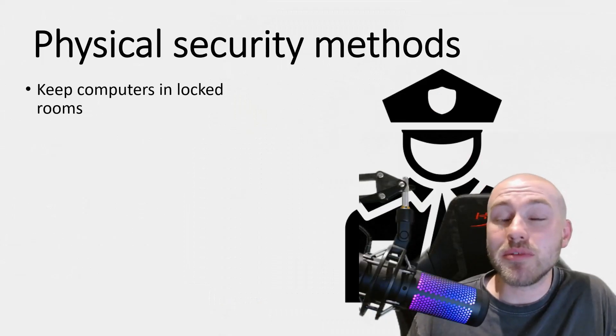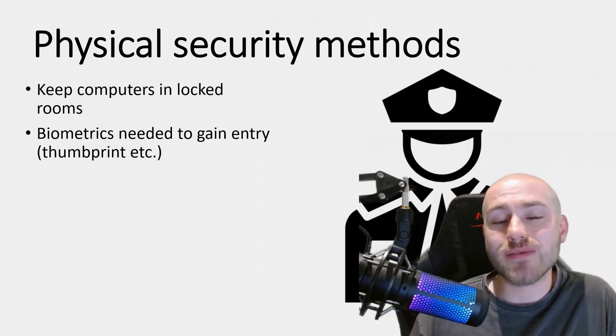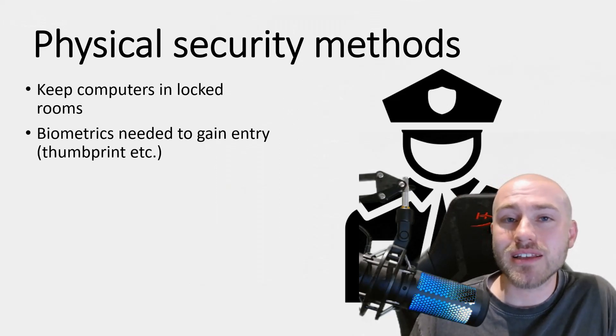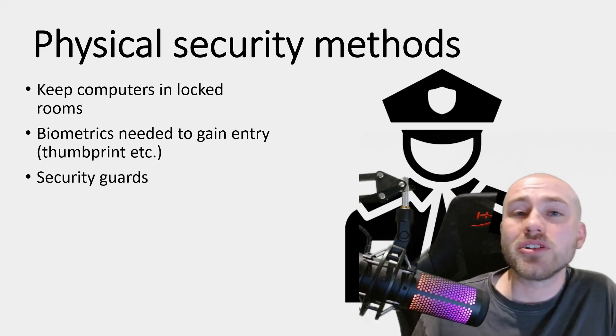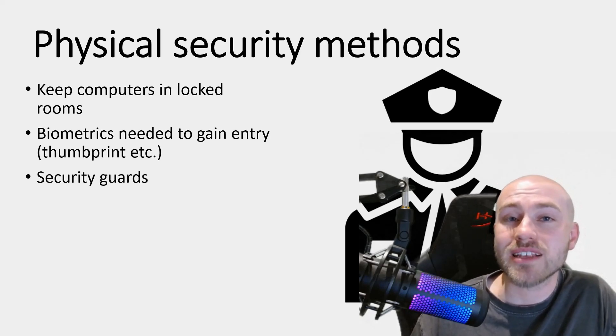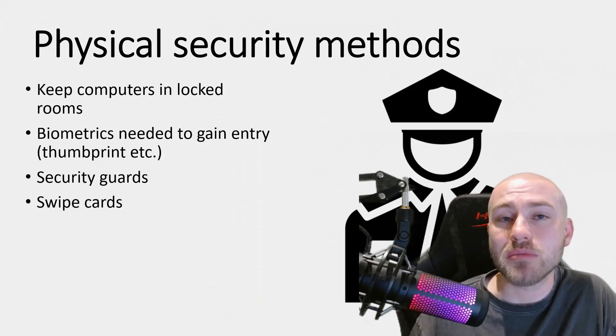There are also physical security methods. These can be as simple as keeping computers in a locked room. Biometrics are very common on smartphones — things like face ID, retinal scanners, and fingerprint scanners. You might also employ a security guard to stop unauthorized access, or use a swipe card, like a badge, to get in and out of buildings.